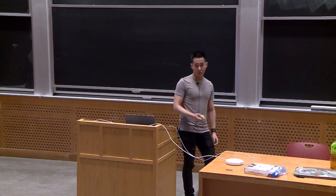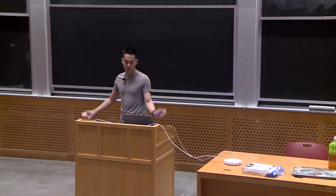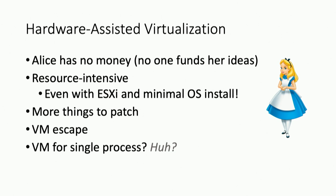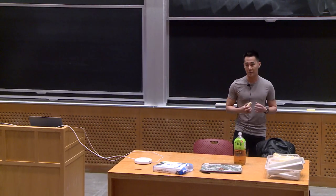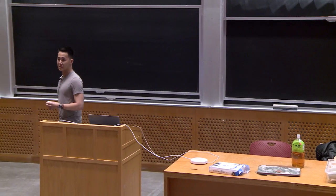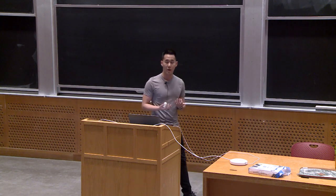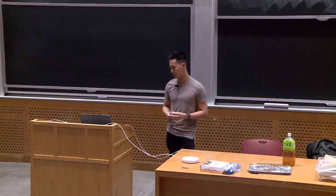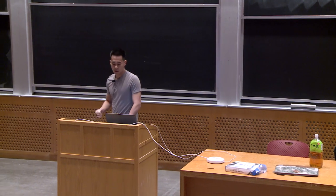The other method would be hardware-assisted virtualization, but she doesn't have a lot of money and it's resource intensive. You're creating a separate instance of an operating system, virtualizing it — multiple kernels on one or two CPUs. When you have multiple virtual machines, you have more things to patch, more than one OS to keep up to date, plus VM escape vulnerabilities. There's also no virtualization for single processes — to virtualize a single process, you have to spin up an entire virtual machine just for that particular process.